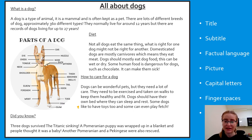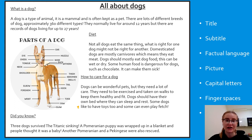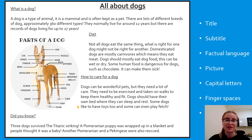In the corner I've written the different features: title, subtitle, factual language, picture, capital letters, finger spaces, and full stops. The one thing I need to explain is factual language - it means something that is not made up. For example, saying 'a dog is a type of animal' is correct and is factual. If I were to say 'dogs are the best animals in the world', some people might not agree, so that's not a fact. Factual language needs to be used in a fact file - all of the information must be factual, not what I think or what you think, but set in stone.